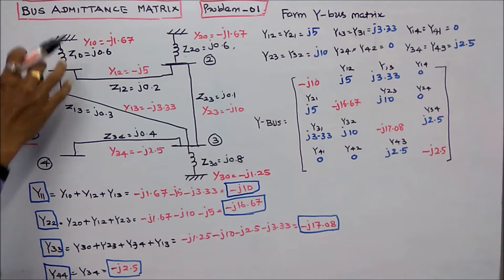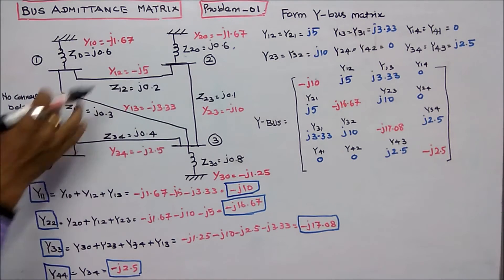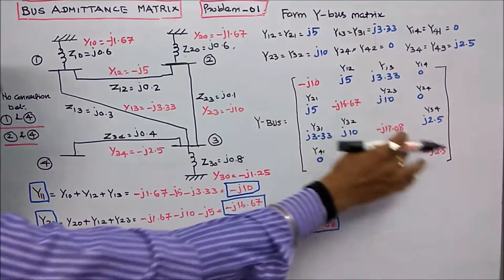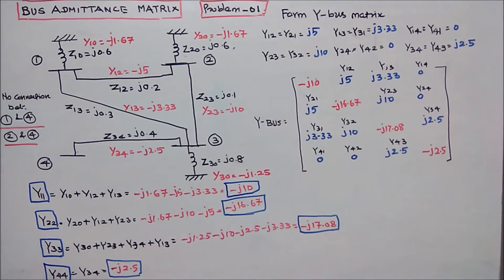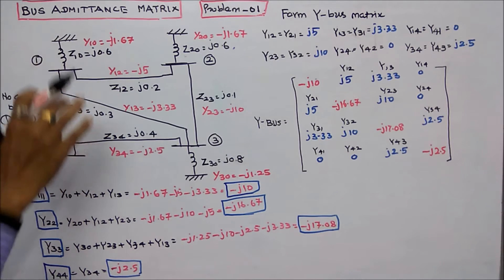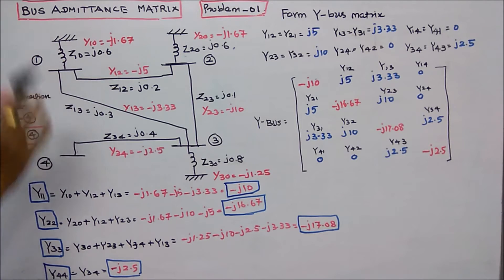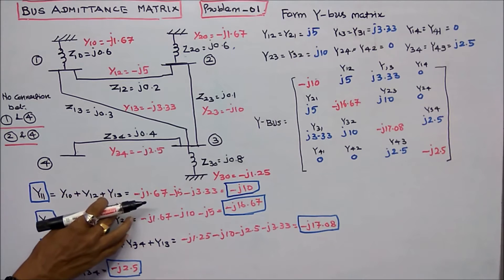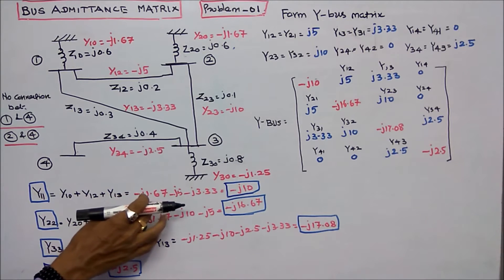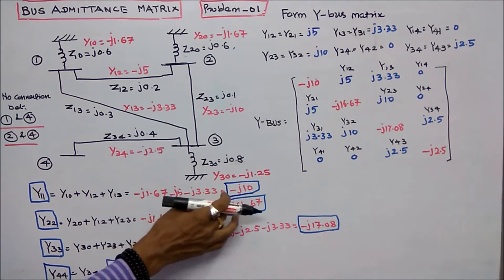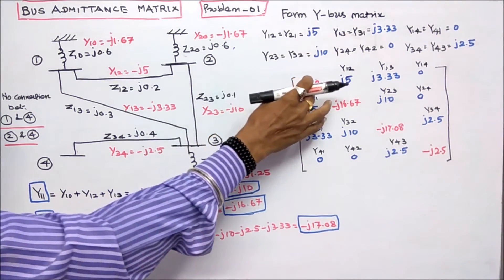There is no connection between buses 1 and 4, or between buses 2 and 4. First, we form the diagonal elements of the Y bus matrix. Y11 equals Y10 + Y12 + Y13, since three elements are connected to bus 1. That gives: −j1.67 − j5 − j3.33 = −j10.